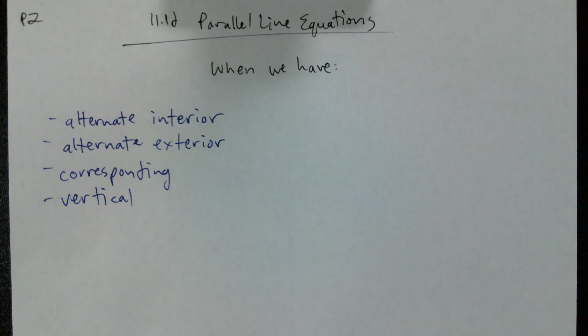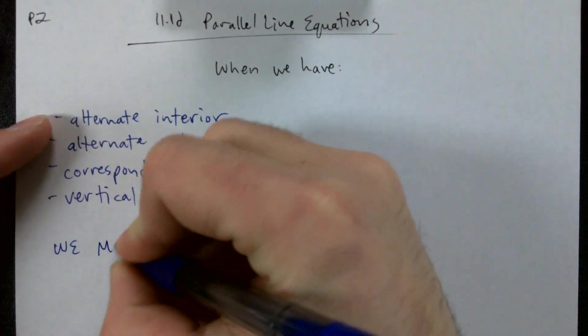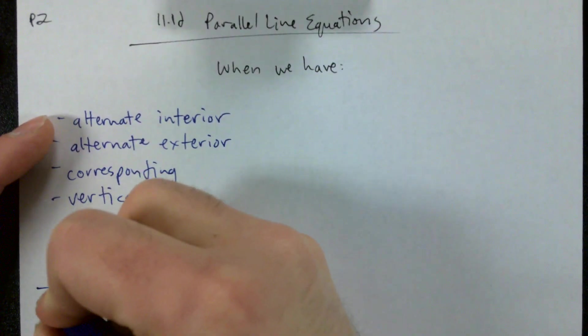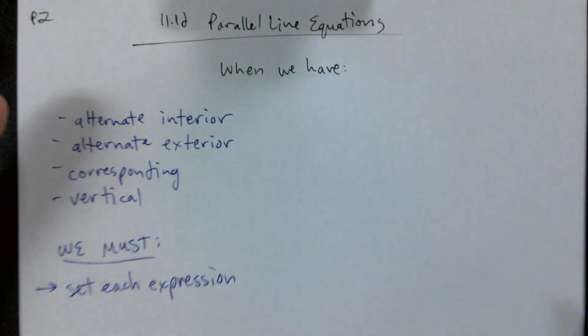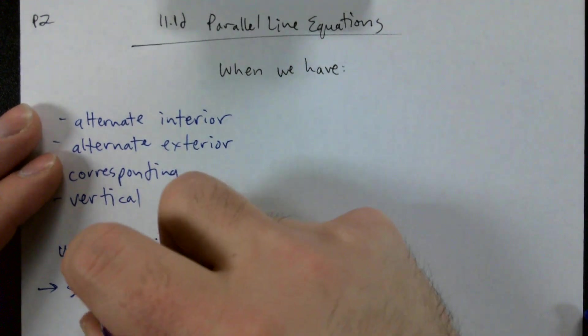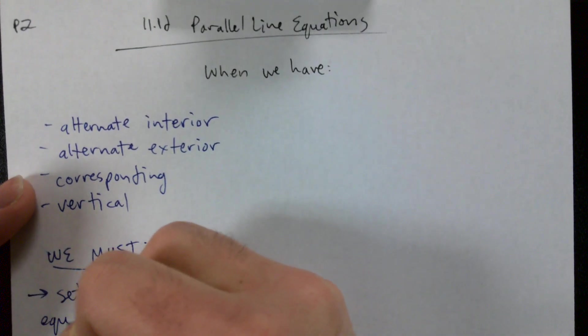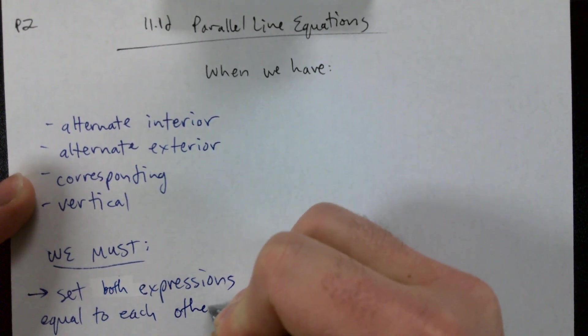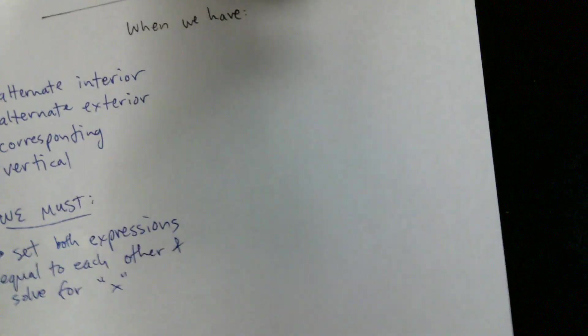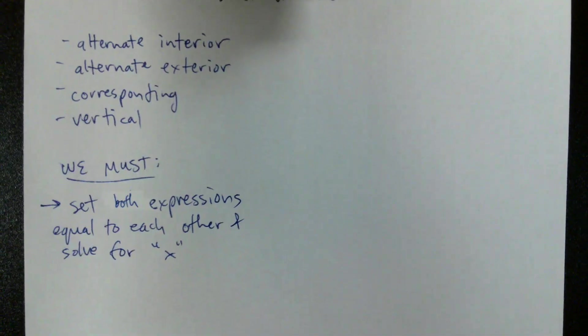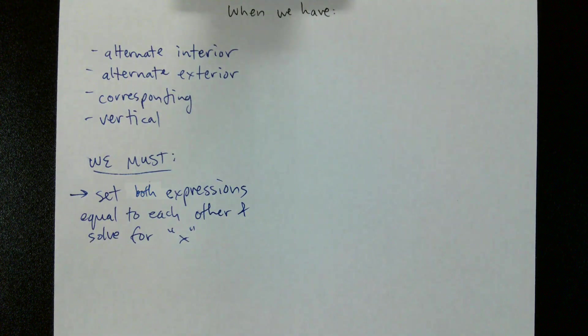Let's write that down. When we have this, we must set both expressions equal to each other and solve for x. So if we have one of those four types of angle relationships, all we need to do is set both expressions equal to each other and solve for x.